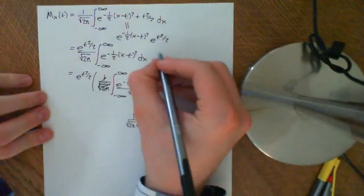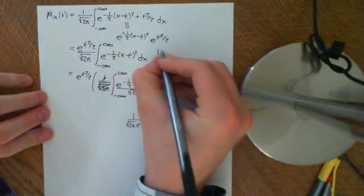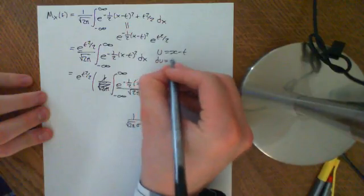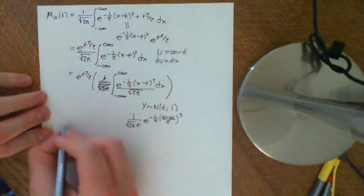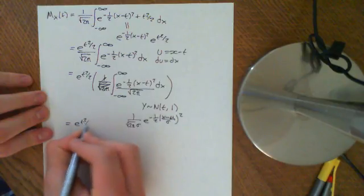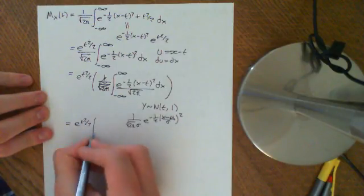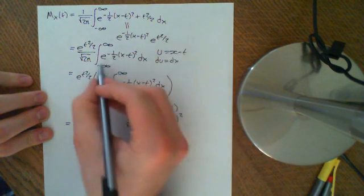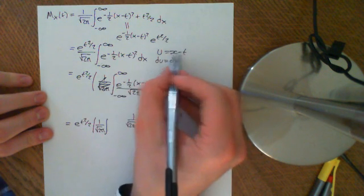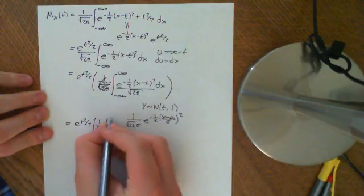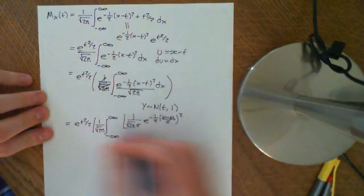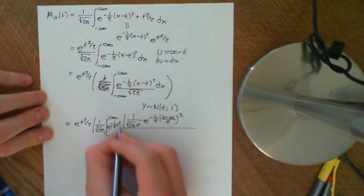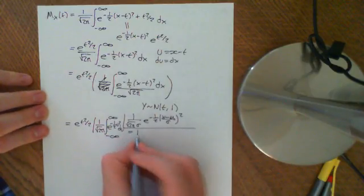Alternatively, using u-substitution: let u equal x minus t, so du equals dx. The limits remain negative infinity to positive infinity, and the integral becomes the integral from negative infinity to infinity of e to the negative one-half u squared du, times 1 over the square root of 2π. That integral equals 1, since it is just the standard Gaussian integral.